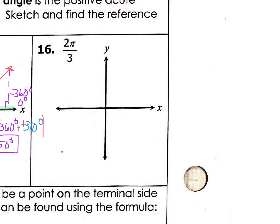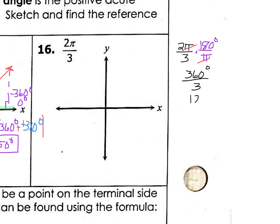This one is in radians. What I will do is convert it to degrees. So I'm going to take 2π/3 and convert it — to get rid of the π and have degrees, the π goes in the denominator and 180 degrees goes in the numerator. The π cancels, and then 2 times 180 is 360 degrees divided by 3, which is 120 degrees. So 2π/3 is exactly equal to 120 degrees.